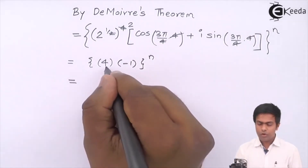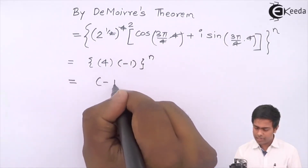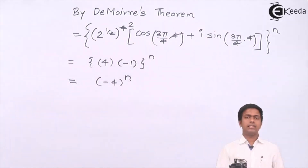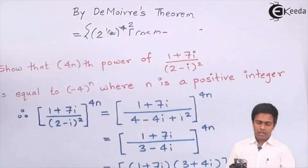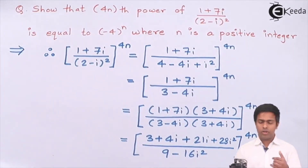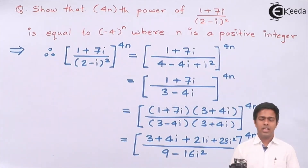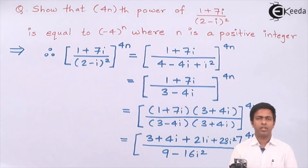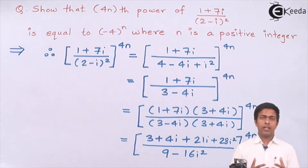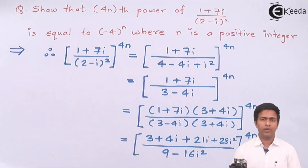Therefore we get (-4)^n, which is exactly our required result. We have proved that the 4nth power of the given complex number equals minus 4 raised to n. Stay tuned and keep watching the channel and website where you can access all videos in sequence. Thank you.